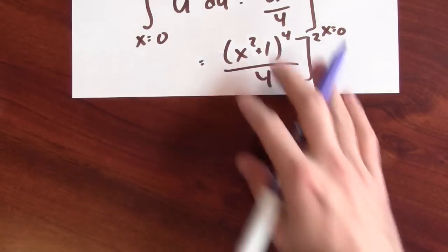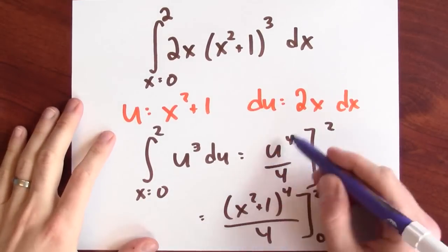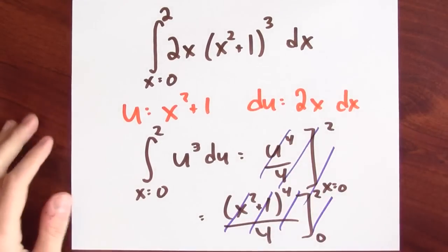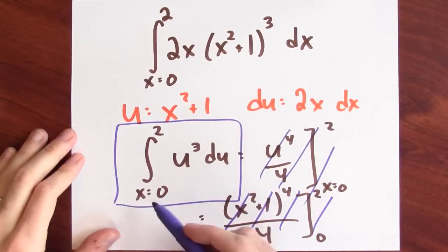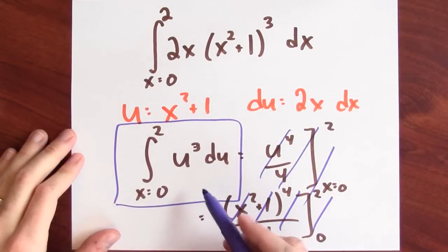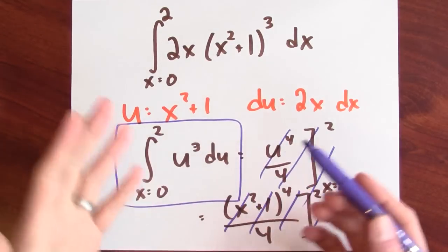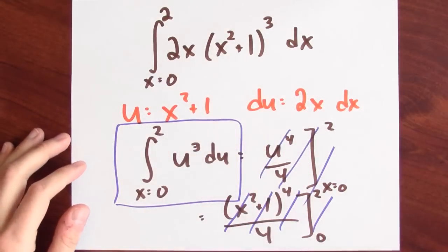But I could have finished this problem off in a slightly different but equivalent way. Let's back up. I'll get rid of this. And let's suppose that I didn't go down this path, but I just stopped here. The problem is that my endpoints are in terms of x, but my integrand now is in terms of u. So I'm just going to change those endpoints.